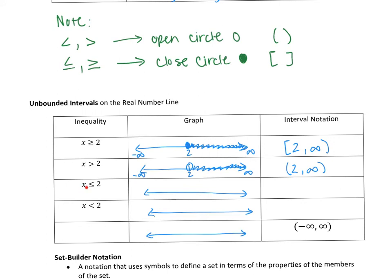The next one is x is less than or equal to two. I'll put down two with a closed circle. This time x is less than two — numbers less than two include one, zero, and negative numbers, so we shade in the left direction. That means our interval is between negative infinity and positive two. We write it in the same order: negative infinity to positive two with a bracket on the two, and infinity always gets a parenthesis: (-∞, 2].